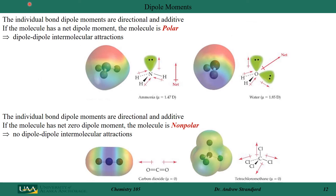When we look at dipole moments in complex molecules, we have two types: bond dipoles and total molecule dipoles. The total molecule dipole — the net dipole — is the vector sum of all the individual bond dipoles. For ammonia, the dipole moment is 1.47 Debye. For water it is 1.85 Debye, so water is a more polar molecule.